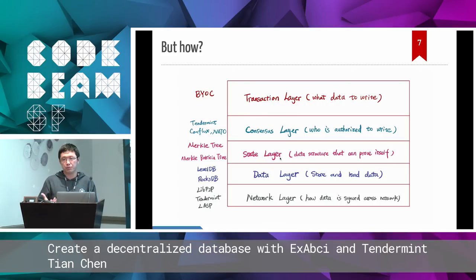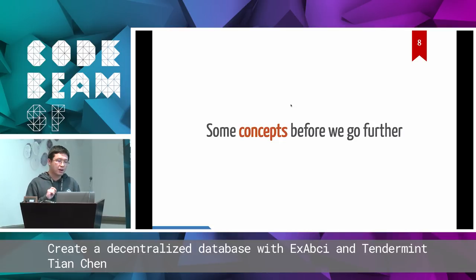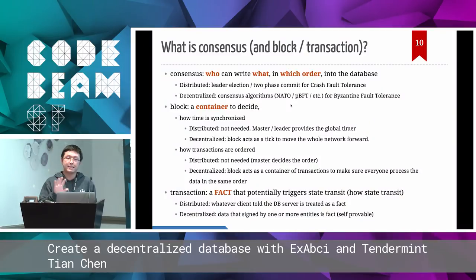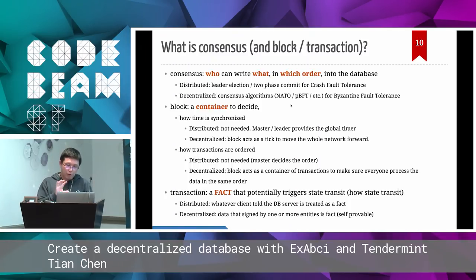Thanks to the open source community, most of the layers below the transaction part are solved by someone else, so we can leverage their existing technology. Before we get into the real code, we need to go over some concepts to help you understand the problem and the solutions. First is the consensus part — who is authorized to write. I'll assume most of you don't know blockchain much, so I will give some very basic concepts on consensus.